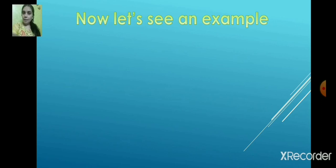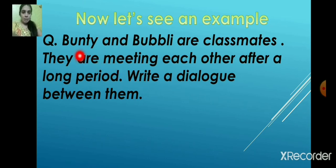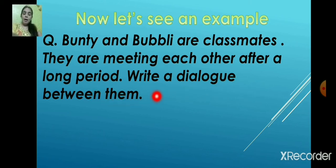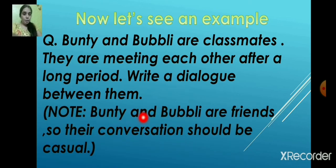Now let's see an example of dialogue writing. The question is: Bunty and Bubbly are classmates. They are meeting each other after a long period. Write a dialogue between them. Since Bunty and Bubbly are friends, the conversation should be casual. Imagine you are Bunty meeting your friend Bubbly — how will you start your dialogue? You would say: 'Hello Bubbly, how are you?'